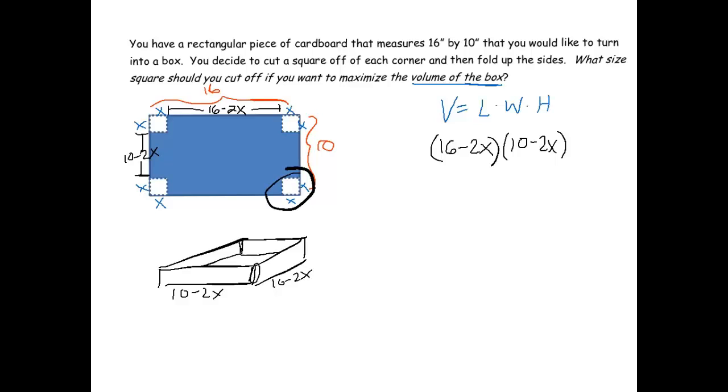That would be the square that we just cut out. These two sides here meeting together. So I say that the height of our box is x. So the volume is 16 minus 2x times 10 minus 2x times x.